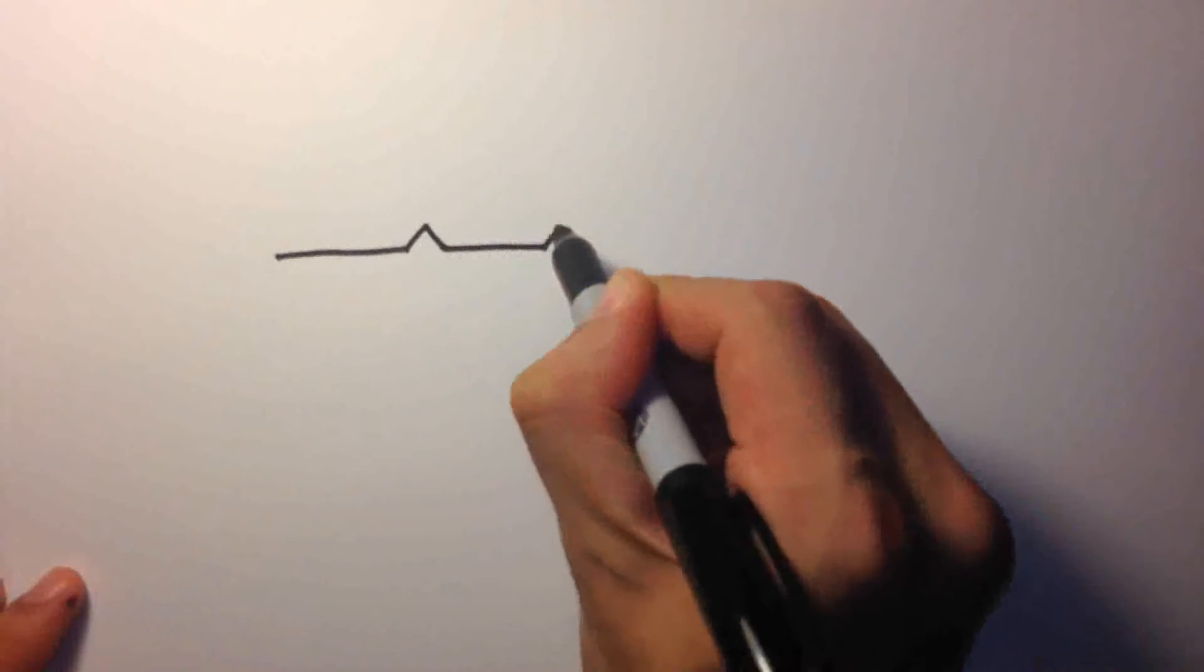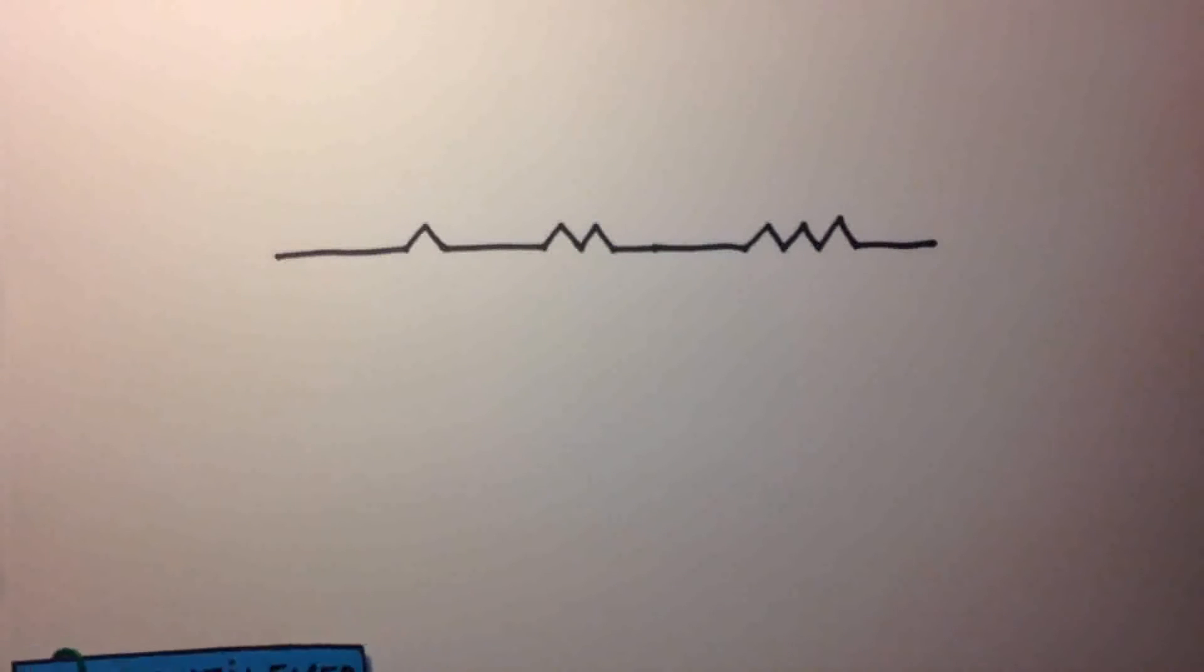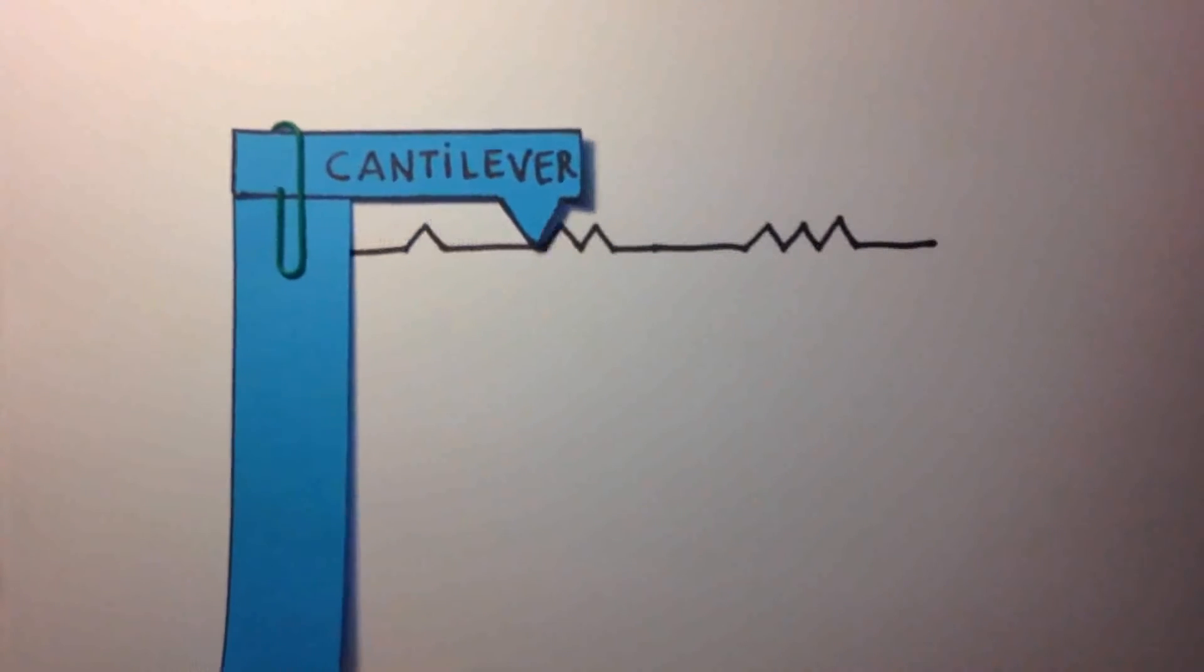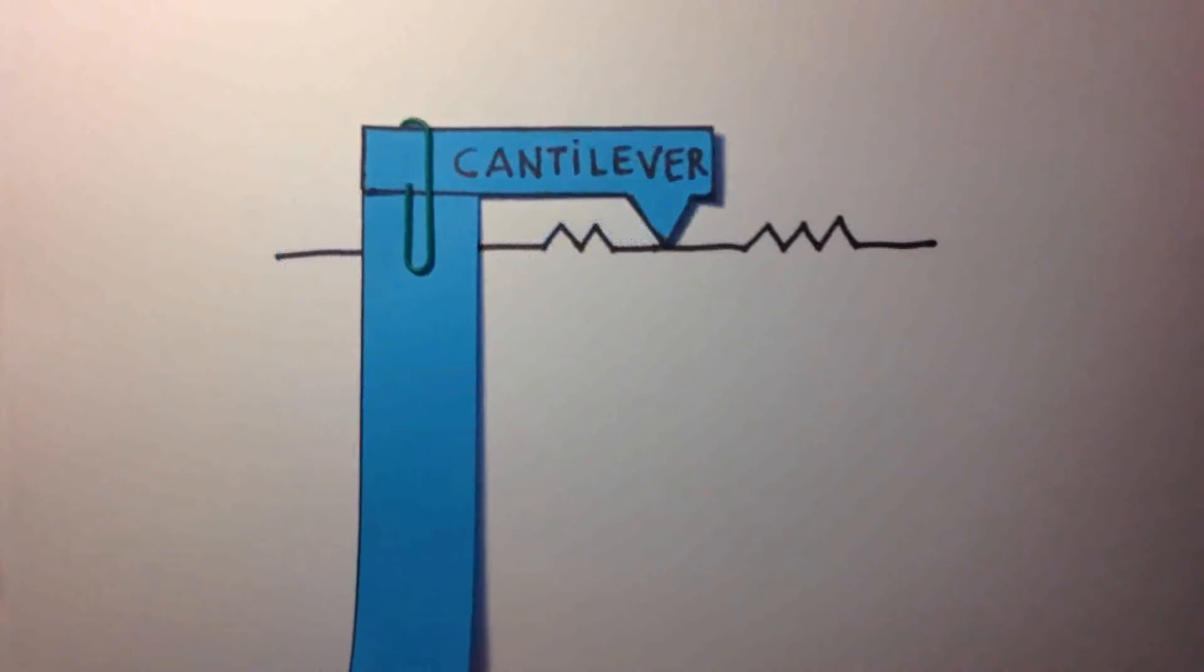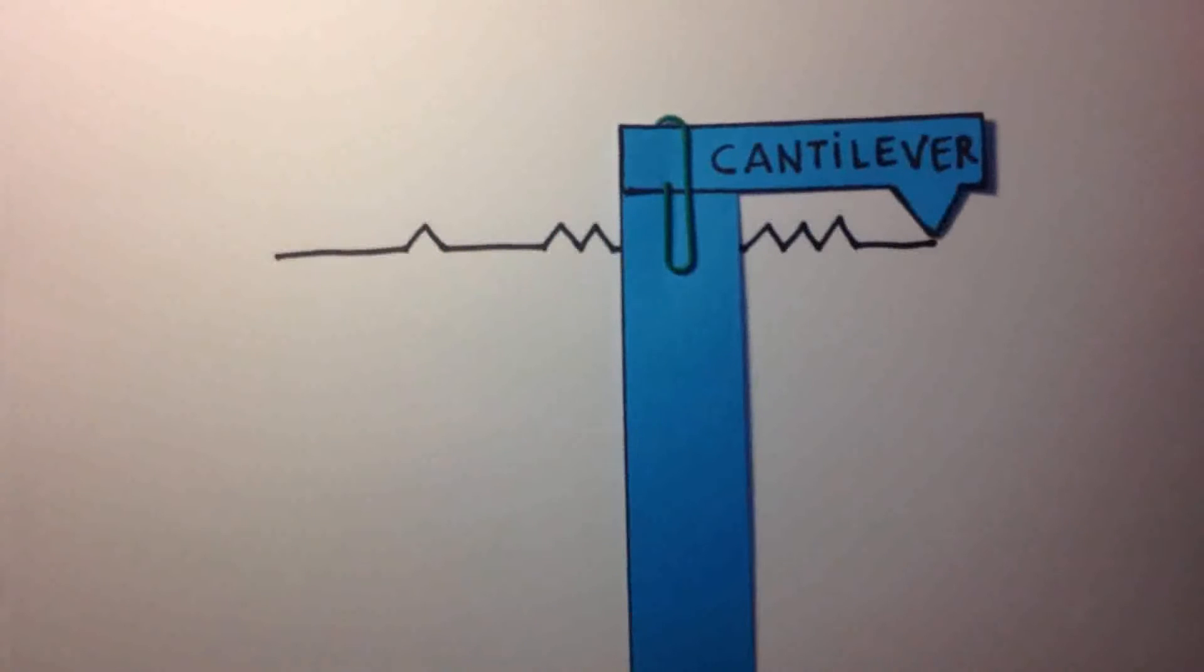In AFM, a structural element anchored at only one end, called cantilever, rasters the surface of the specimen. The measurement is obtained recording the interaction between the tip of the cantilever and the sample. The smaller the tip, the higher the resolution.